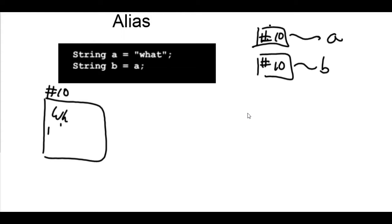We have string B is assigned A. Now, that doesn't mean a copy is made. What happens here is that B gets the reference to the memory location. So, they're both pointing to that same memory location with the word what. So, they both have the number 10 stored to them, for example.